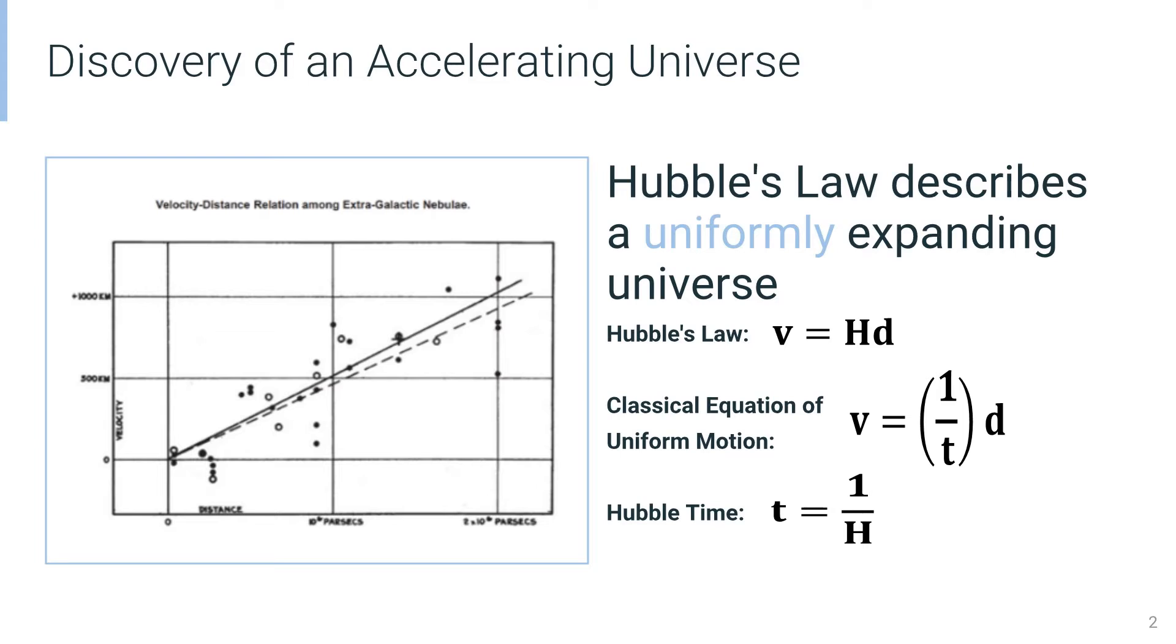Hubble's Law was originally derived from data showing that the universe is uniformly expanding, as can be seen by the graph on the left. However, we now have new data that deviates from this law. As such, we need to rethink Hubble's Law and its applications in cosmology.